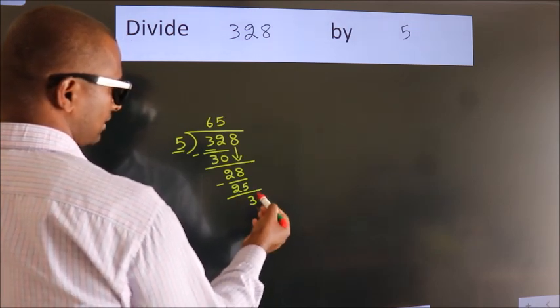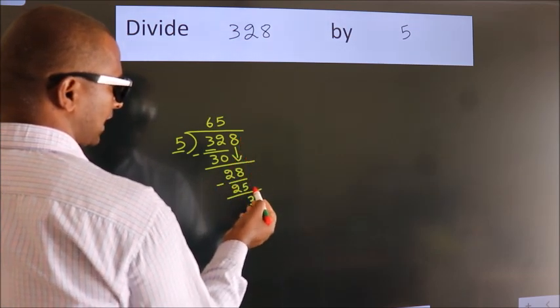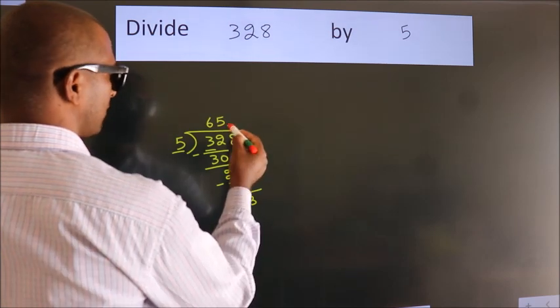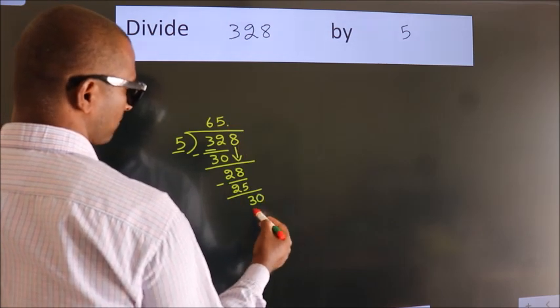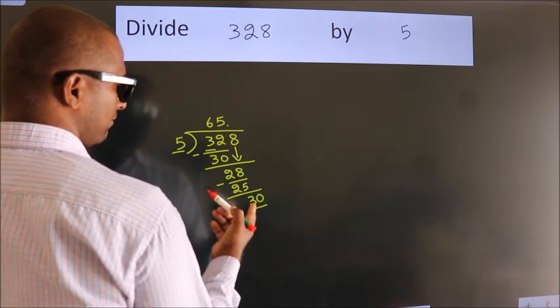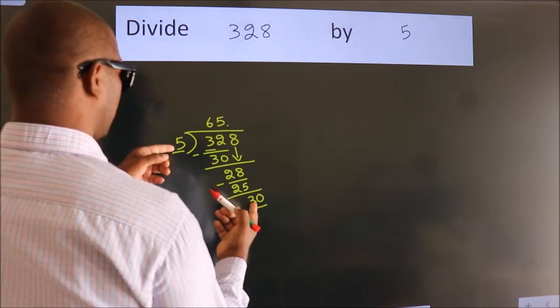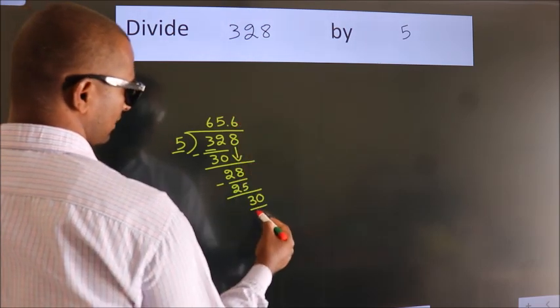After this, no more numbers to bring down. So what we do is put a dot and take 0, so 30. When do we get 30 in the 5 table? 5 times 6 is 30.